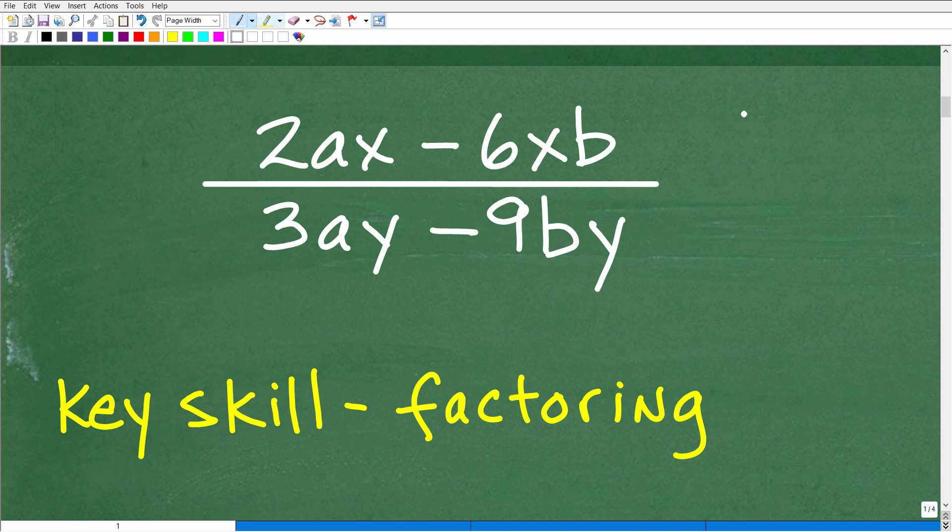Anytime you hear the word rational in algebra or mathematics, you want to be thinking fractions. Things like two-thirds, this is a rational number. So we wouldn't technically call this a fraction. It wouldn't be so wrong to say this is a fraction. Really, this is a rational expression. It's a fraction that has variables in it.